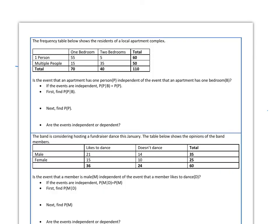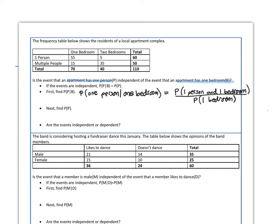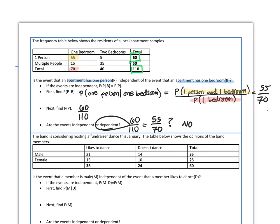What if we had a frequency table? Here we can't readily tell whether these are independent or dependent events. The question asks us to figure out whether the event that an apartment has 1 person is dependent or independent of the event that an apartment has 1 bedroom. First, the probability that an apartment has 1 person given that it is a 1-bedroom apartment: there are 55 such apartments out of 70 one-bedroom apartments. The probability of having a 1-person apartment overall is 60 out of 110 total apartments. Are these two ratios equal? No — so since they are not equal, these are dependent events.